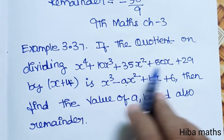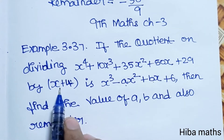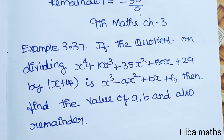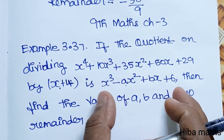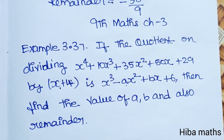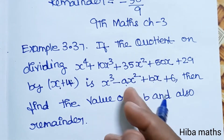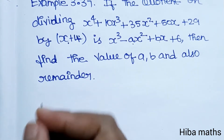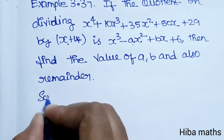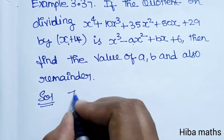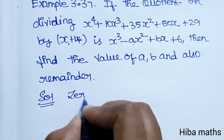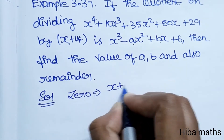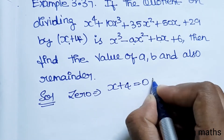We will divide to find A and B, and also find the remainder. In the solution, we use the remainder theorem. Setting x + 4 equal to 0, so x is equal to minus 4.